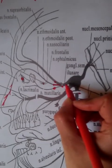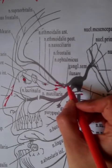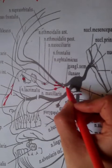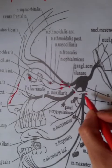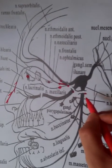This is the first branch, and the first branch is Nervus Ophthalmicus. The second is Nervus Maxillaris, and the third one is Nervus Mandibularis.